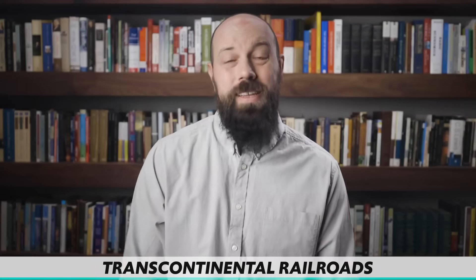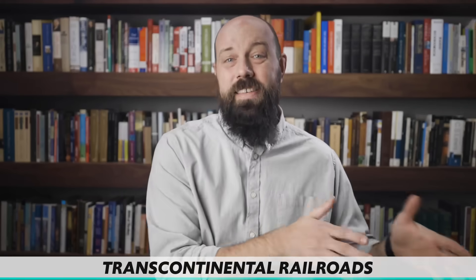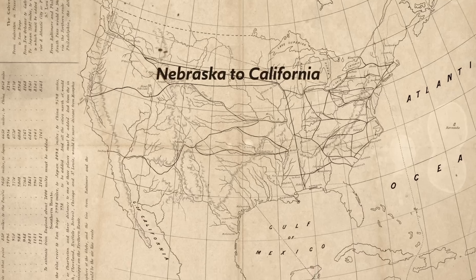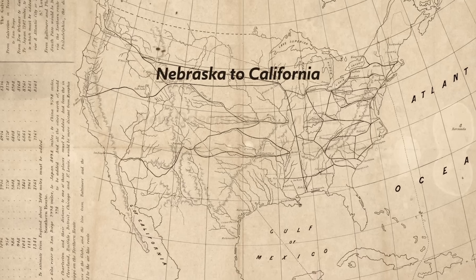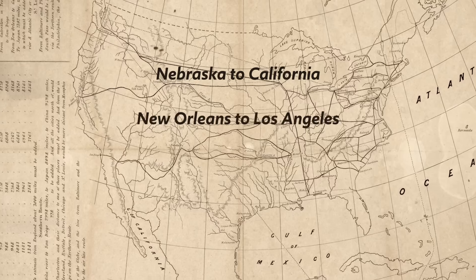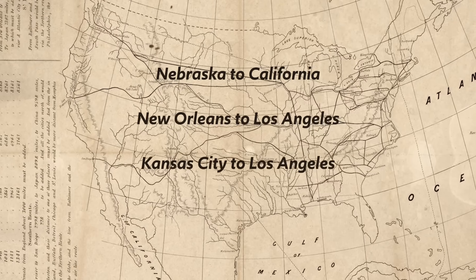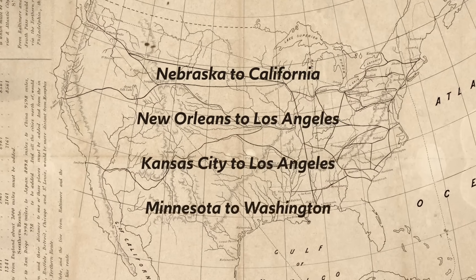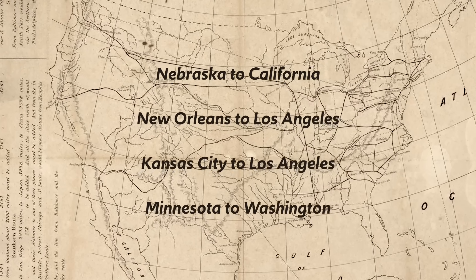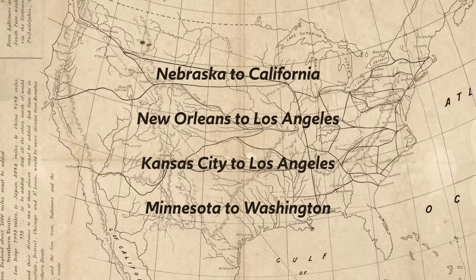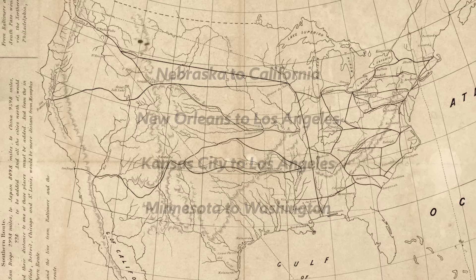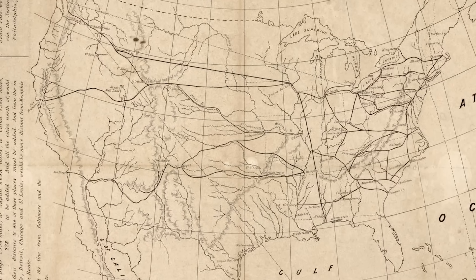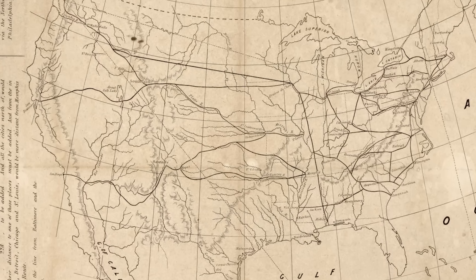By the end of the century, four new transcontinental railroads were built in addition to the first one finished in 1869. These connected Nebraska to California, New Orleans to Los Angeles, Kansas City to Los Angeles, and Minnesota to Washington. With all that accomplished, the East and the West were now easily accessible to each other, and this created a national market for goods.